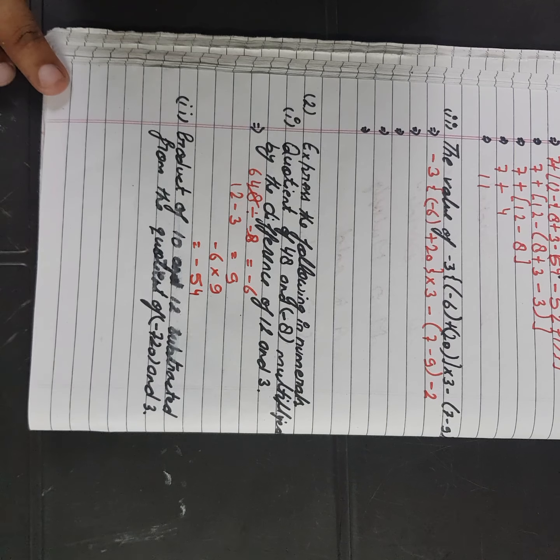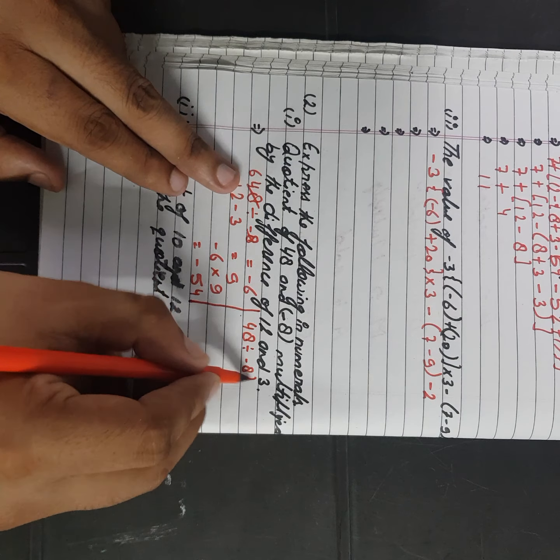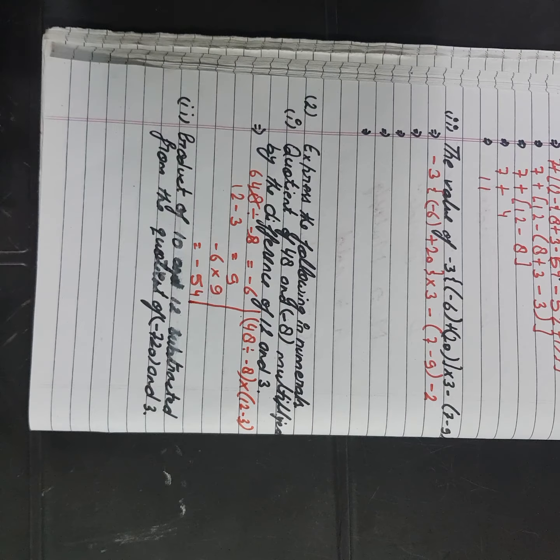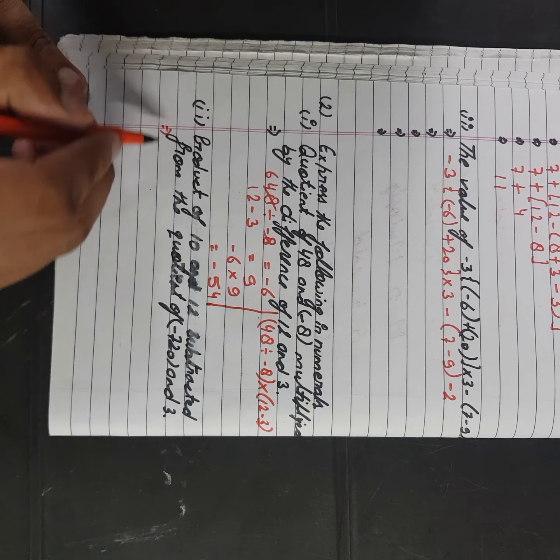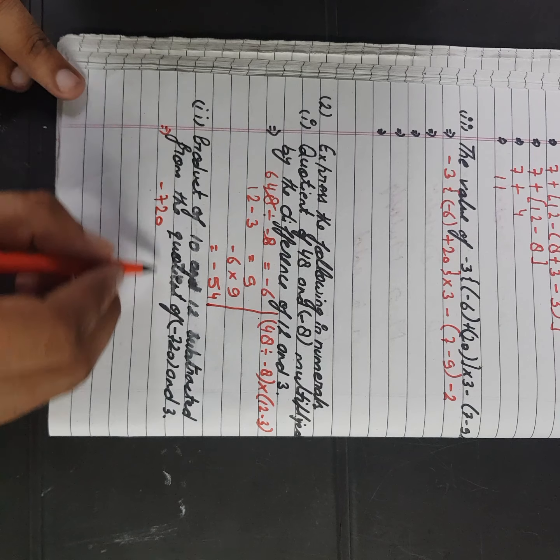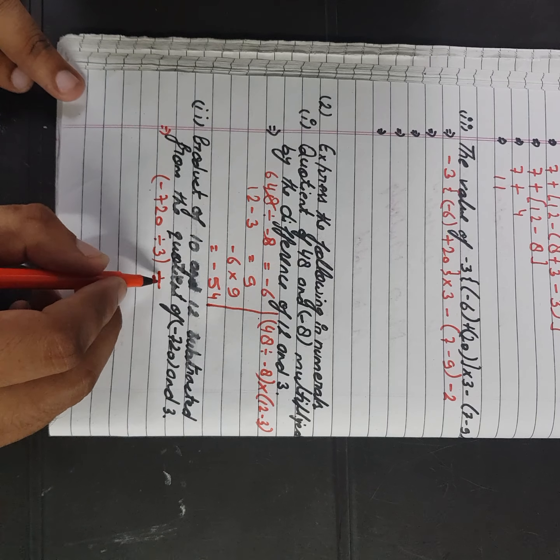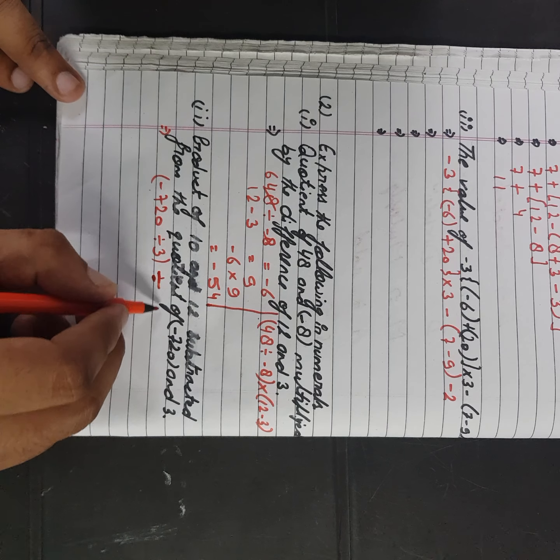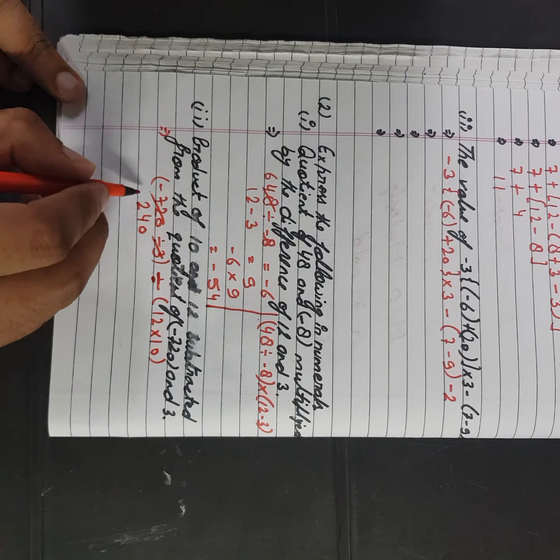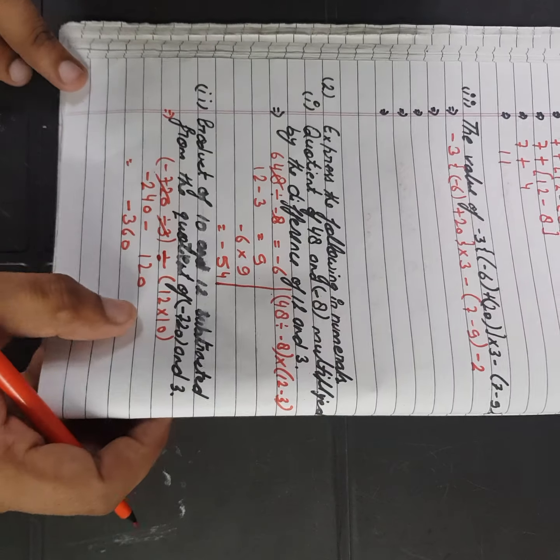Next, divided by the difference, difference nikali jayga. 48 divided by minus 8, jayga, minus 4 into, minus minus 3. Well minus 3, jayga. The product of 10 and 12 subtracted from. We write from, from ka matlab minus. 720 divided by 3. Minus 240 minus 120, we will add this because it will be minus minus plus. So the answer will be minus 360. OK, the next question now simplify.